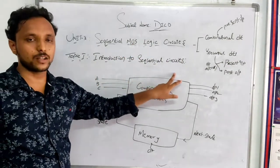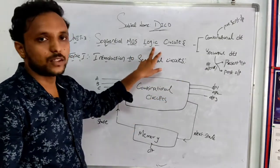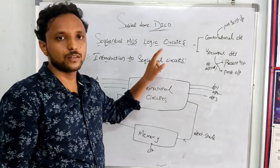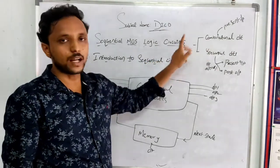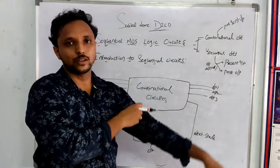Before going to sequential circuits, I will revise logic circuits. What are the classification of logic circuits? Logic circuits can be classified into two types: one is combinational circuits and another one is sequential circuits.